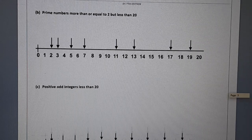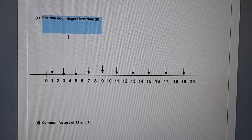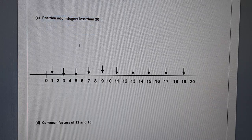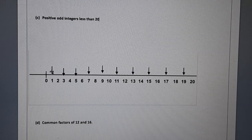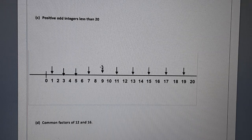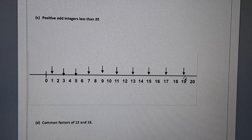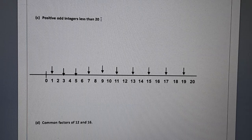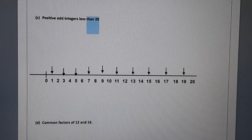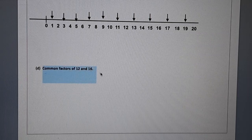And in the next part, we have to represent positive odd integers less than 20. That is 1, odd number positive integer: 3, 5, 7, 9, 11, 13, 15, 17, 19. Positive odd integers less than 20.